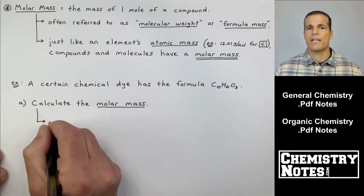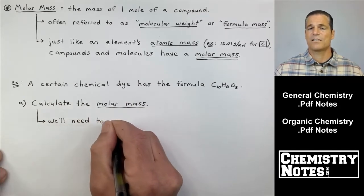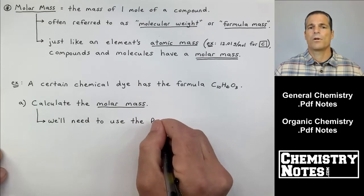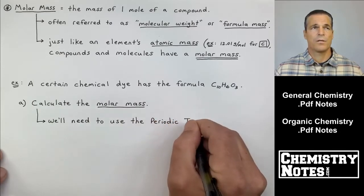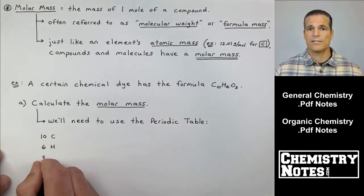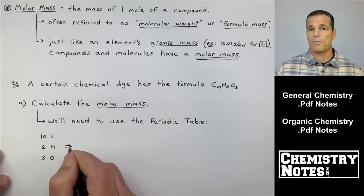So in part A they want me to calculate the molar mass. So essentially I'm going to have to add up 10 carbons, six hydrogens, and three oxygens, right? Well, we're going to need the periodic table because some of us know the atomic masses already for guys like carbon, hydrogen, and oxygen. Some of us don't.